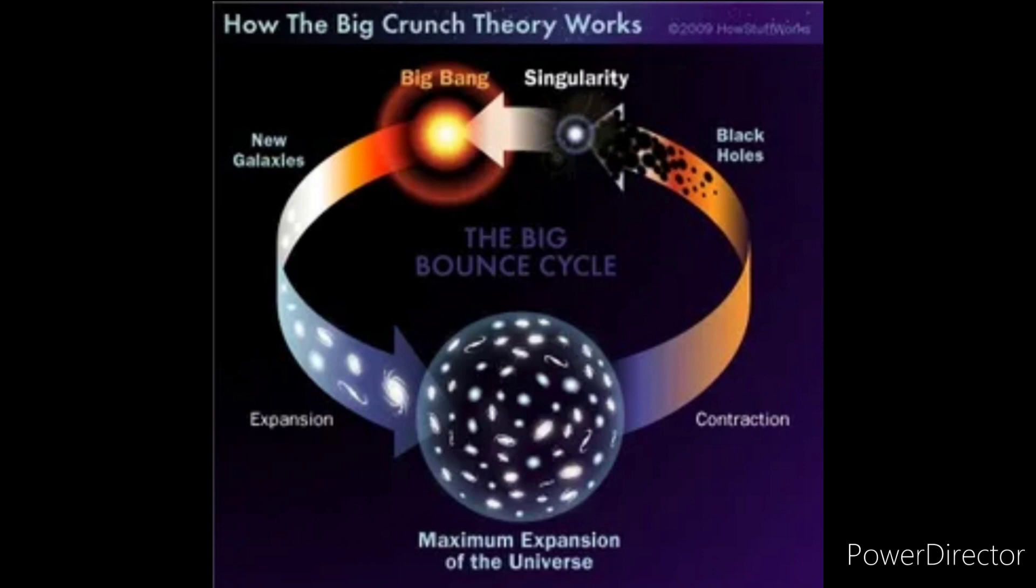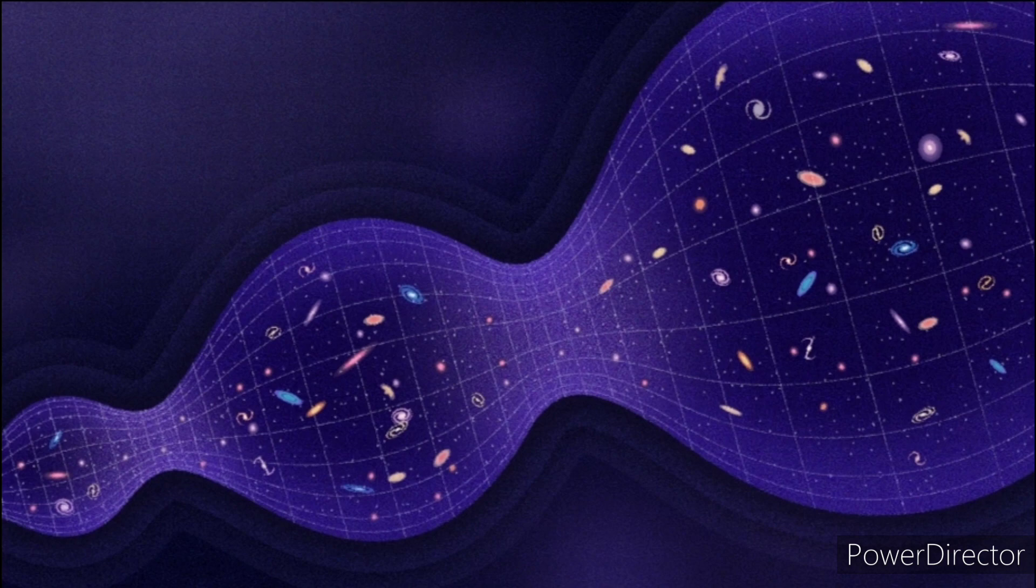To conclude the video, basically the Big Crunch is when the universe will end because of gravity. The Big Bounce is when another Big Bang happens. The Big Freeze is when gravity will no longer be able to lower the entropy in the universe. Therefore, the entropy will increase and the universe will become a dark cold place.